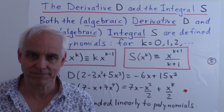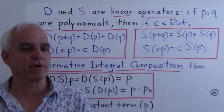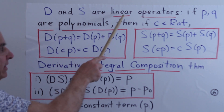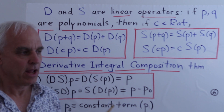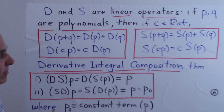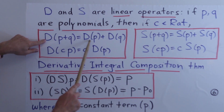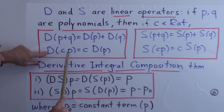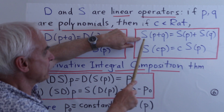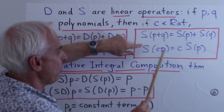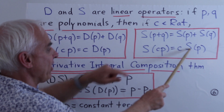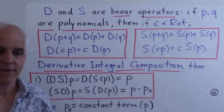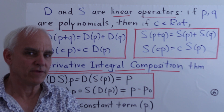Some important fundamental properties: first, D and S are linear operators. That means if p and q are polynomials and c is a number, then D(p + q) = D(p) + D(q) and D(cp) = c·D(p). Exactly the same holds for the integral: S(p + q) = S(p) + S(q) and S(cp) = c·S(p).